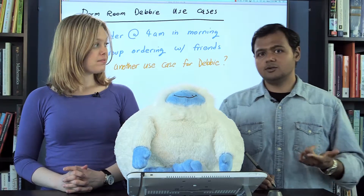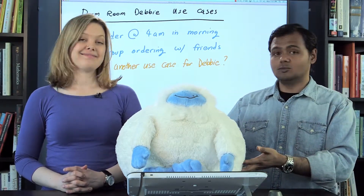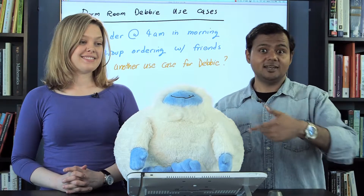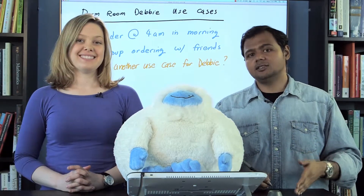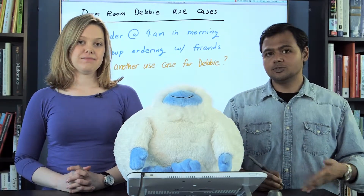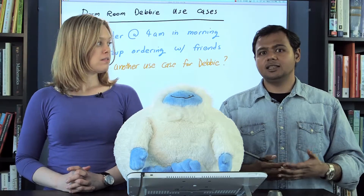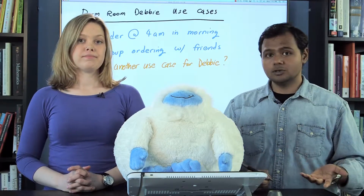Before we do that though, let's address the elephant in the room. We actually didn't have an elephant, so we got this thing instead — the abominable snowman. So where did these persona attributes and use cases come from? How do we validate that they're representative of actual users in the real world?